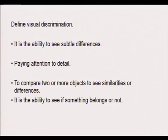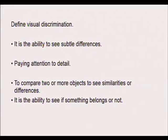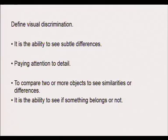Let us look at what visual discrimination is. Please, it has nothing to do with testing your eyes. Visual discrimination is the ability to see differences in pictures — like in the You magazine where there are always two similar pictures and something is left out, maybe the bunny's ears, the toes, or the buttons. That is the ability to see subtle differences, paying attention to detail — like one eyelash missing — and comparing two pictures or objects to see their similarities and differences. It is the ability to see if something belongs or not.